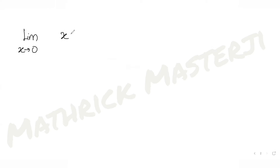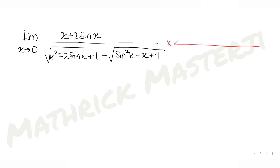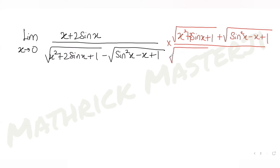Let's try to solve this limit. The numerator is x plus 2 sin x, and the denominator has two square root terms. The general strategy when you have roots in the denominator is to rationalize — multiply and divide by the conjugate, replacing the minus sign with a plus sign between the two root expressions.